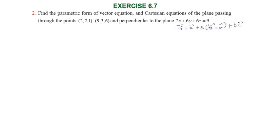Find the parametric form of vector equation and Cartesian equation of the plane passing through the given points and perpendicular to the plane 2x plus 6y plus 6z equal to 9.